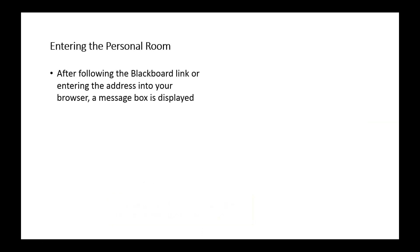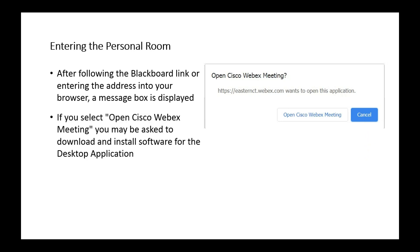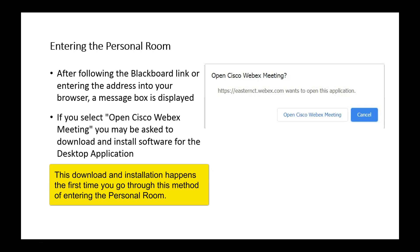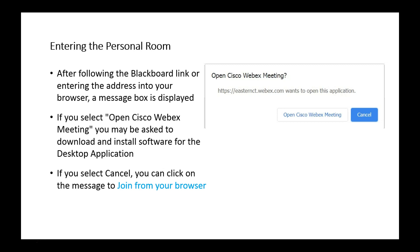If you've clicked on the Blackboard link or entered the address into your browser, a message box is displayed giving you two options: one is to open the Cisco WebEx meeting, and the other is to cancel. By opening the Cisco WebEx meeting, you'll be asked to download and install software for the desktop application. If you're running on a Windows machine, this will ask you to download the WebEx.exe file. If you're unable to do an installation, simply click cancel, and there will be a link that says 'join from your browser.'